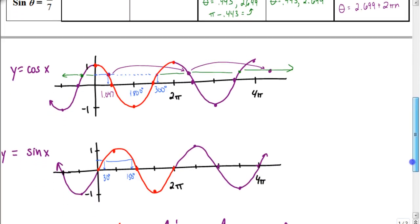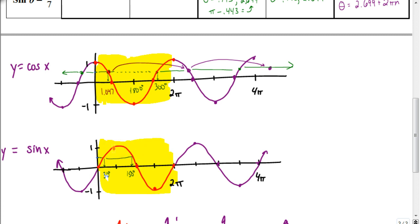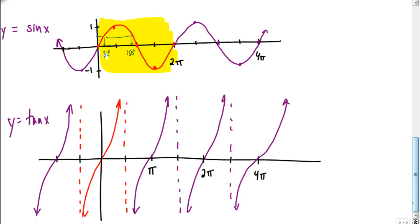To summarize — and we'll cover this more in the next video — for the cosine function, between 0 and 180 we always have one solution, and between 0 and 2π we have two. For the sine function, between 0 and 180 we have two solutions half the time, and between 0 and 2π we always end up with two full solutions. We'll stop here and in the next video summarize and discuss the tangent function.